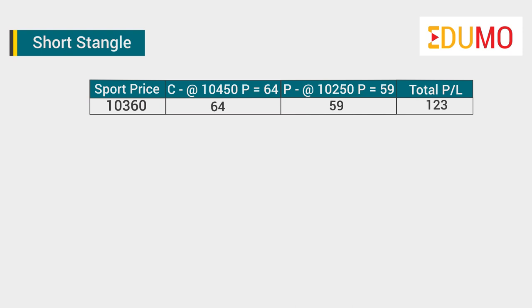This means, to be in profit from this strategy, the underlying asset has to stay in the range of 123 points up or down from 10,360.